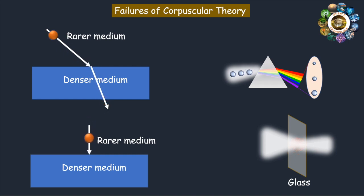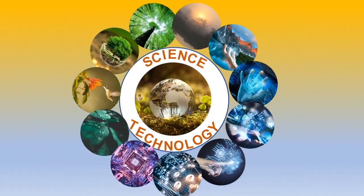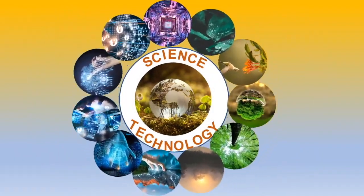The corpuscular theory cannot explain the phenomena of diffraction, interference, and polarization of light. To see more videos like this, please consider subscribing.